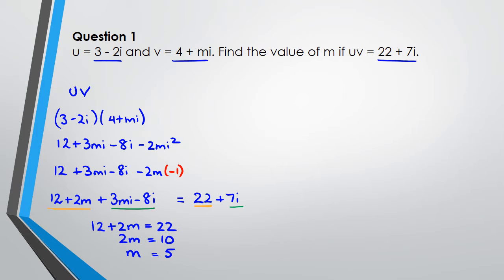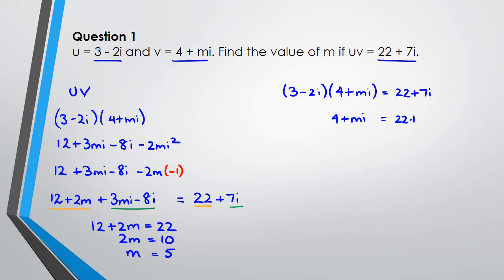Another way to do it is: take (3 minus 2i)(4 plus mi) equals 22 plus 7i, rearrange so that (4 plus mi) equals (22 plus 7i) divided by (3 minus 2i). You could multiply by the conjugate of the denominator the long way, or just enter 22 plus 7i divided by 3 minus 2i in the calculator and you get 4 plus 5i, confirming m equals 5.